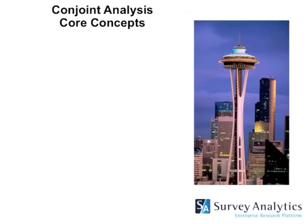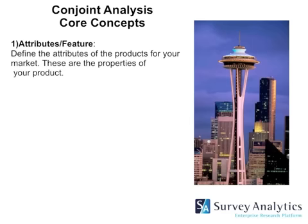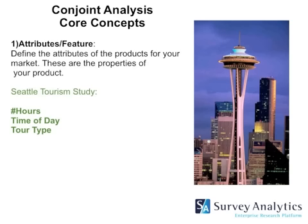The conjoint analysis core concepts — if there's anything you would learn from today's presentation, it's these four main concepts. The first is attributes and features: you want to define the attributes or properties of your product. Using a Seattle tourism study as an example, the features or attributes would be the number of hours on the tour, what time of day, and what tour type they're going to offer.